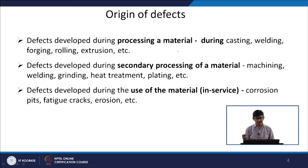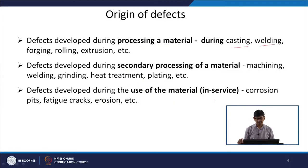The origin of defects can be during the processing of material — in terms of metallurgical engineering, either during casting, welding, forging, extrusion, and so on. Or it can develop during the secondary processing of material, for example machining, grinding, heat treatment, etc. Or it can develop during the use of material — in service, maybe due to corrosion, the material is exposed to a corroded environment introducing defects, or due to fatigue loading initiating cracks, or erosion. In all three cases we want to know whether any defects are there and what is the dimension of those defects.